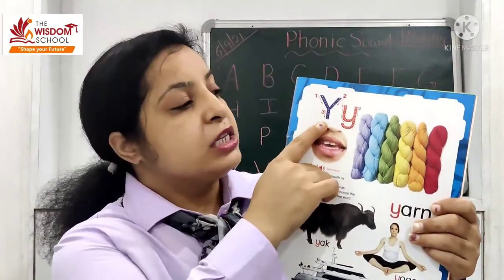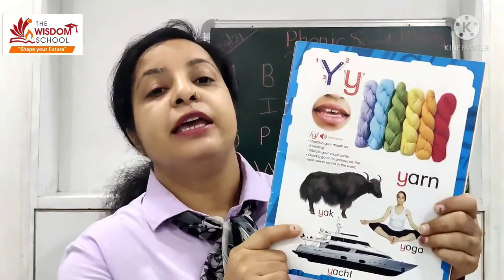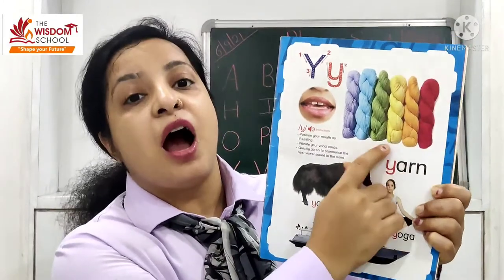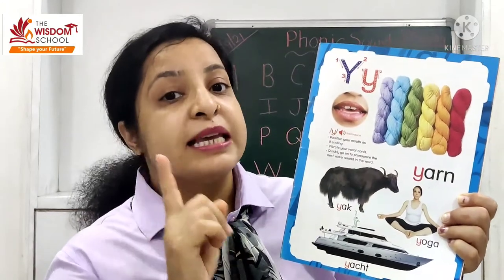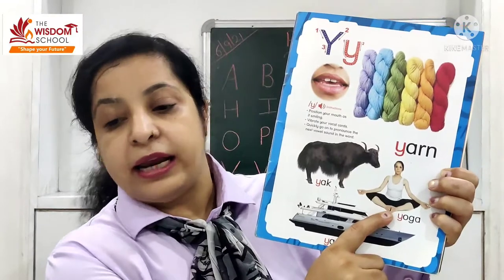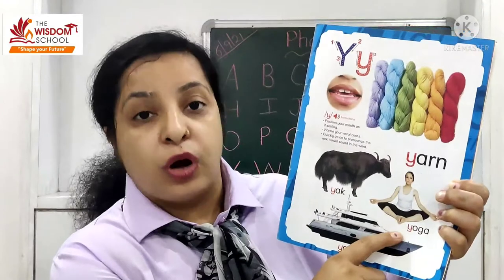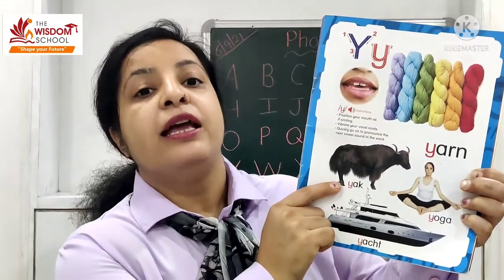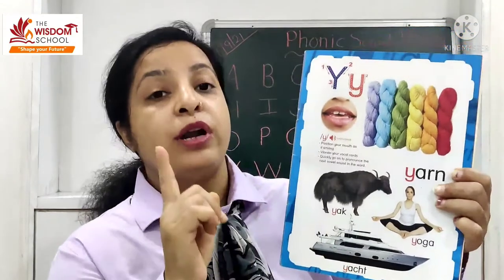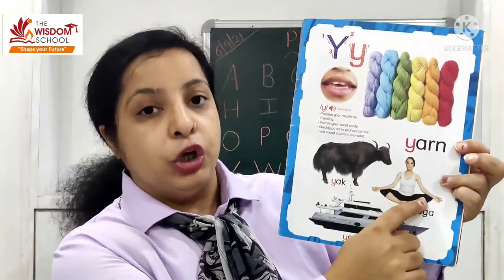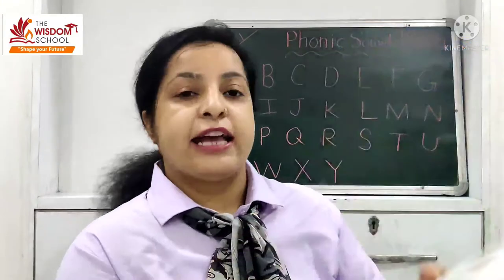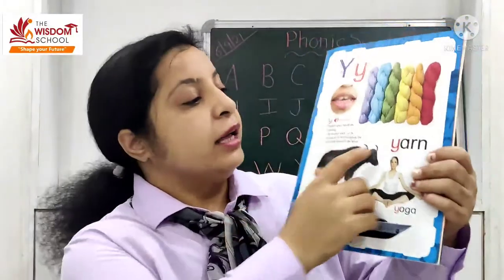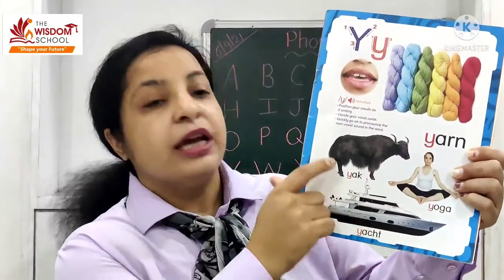Next letter is letter Y. This is mama Y, this is baby Y. The sound of letter Y is Y. Look at the pictures: Yaan - Y sound - yaan. Yoga - yoga. Yaach - yaach. Yaak - yaak. So the sound of letter X is S: box, wax, fox, fax. And the sound of letter Y is Y: yaan, yoga, yaach, yaak.